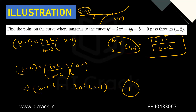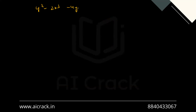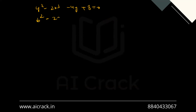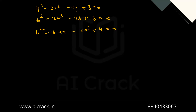Since (a, b) lies on the curve: b² - 2a³ - 4b + 8 = 0. We notice b² - 4b + 8 can be rewritten: (b - 2)² - 4 + 8 = (b - 2)² + 4. So: (b - 2)² = 2a³ - 4. This is our second equation.